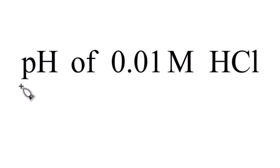Let's figure out the pH of a 0.01 molar solution of HCl, aqueous hydrochloric acid. Here's how you need to think about this: hydrochloric acid is a strong acid. That's just something that you memorize.